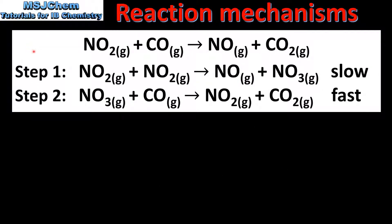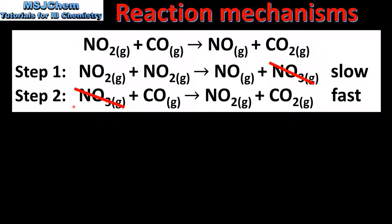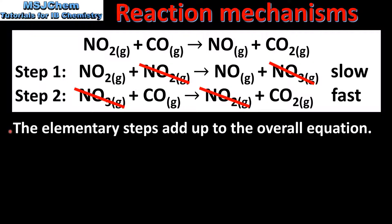In our next example we will look at the proposed reaction mechanism for this reaction. Like in the previous example, we have a two-step reaction mechanism with the slow step being the first step, which is the rate-determining step. We start by seeing if the elementary steps add up to the overall equation. In step 1, NO3 is produced and it's consumed in step 2, therefore NO3 is a reaction intermediate and is crossed out. We also have one NO2 in the products of step 2 and two NO2 in the reactants of step 1, so we can cross one out from each. We are left with one NO2 and one CO in the reactants and one NO and one CO2 in the products. Therefore the elementary steps add up to the overall equation.